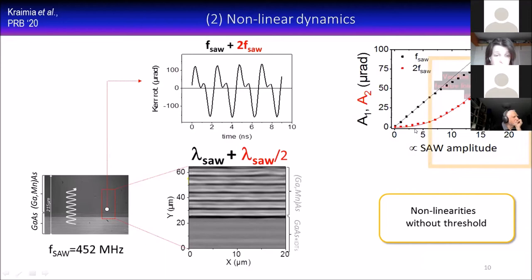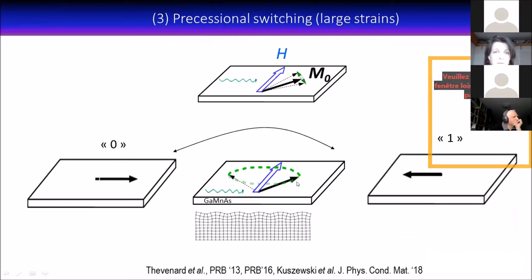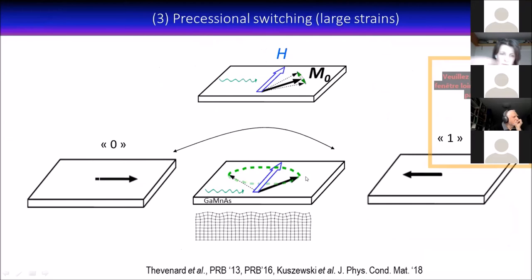The last thing I want to show is one step beyond frequency doubling: going to very non-linear dynamics. That's what happens when instead of just rotating around its equilibrium position, the magnetization rotates around the applied field. This is what happens in traditional precessional switching. What we predicted in 2013 is that for large enough strains, we would be able to have this very large amplitude around the applied field. If we stopped the excitation, the acoustic excitation, at the right moment with the right phase, we would be able to switch from one static position to another static position.